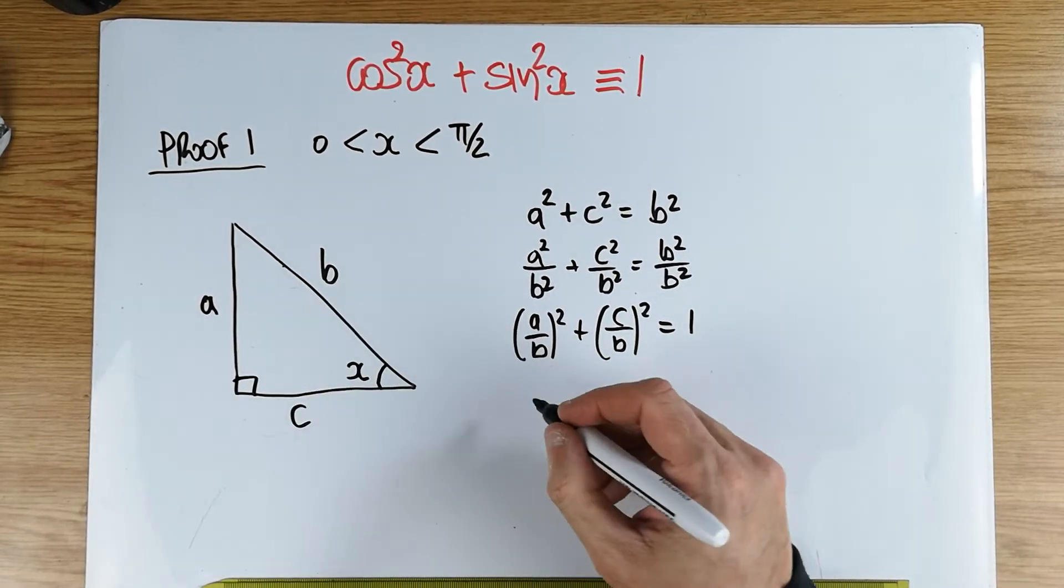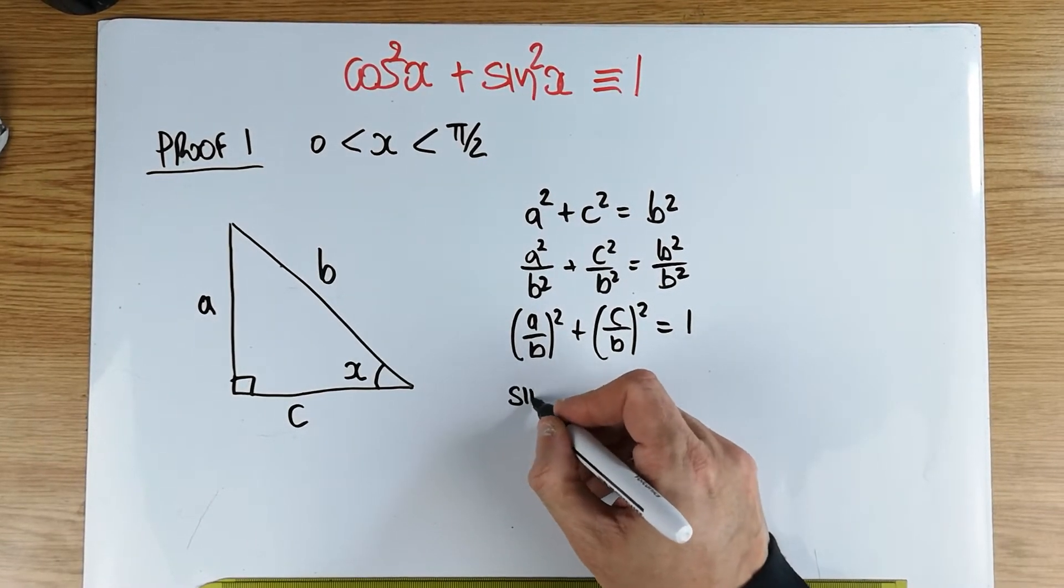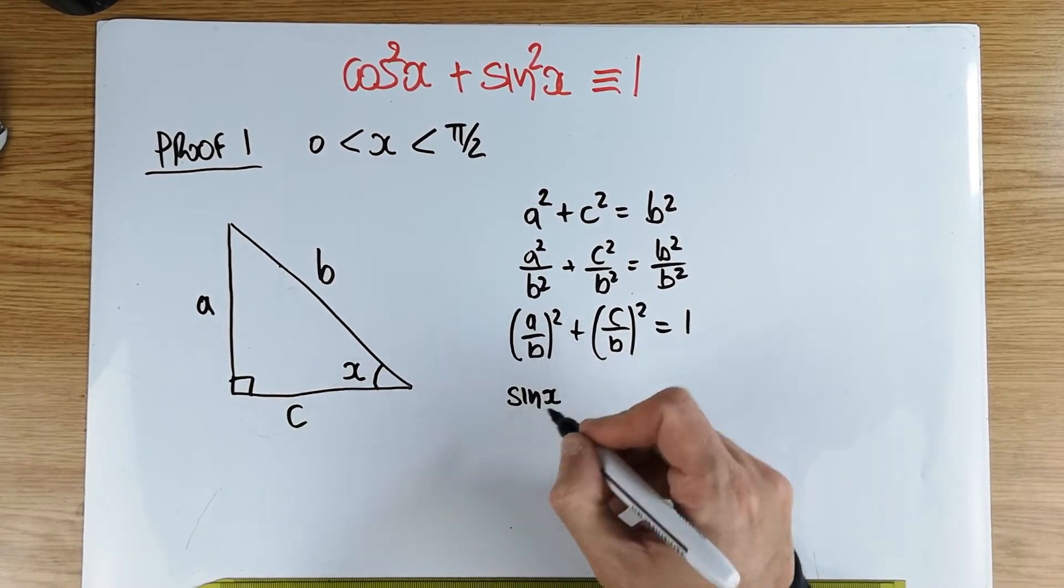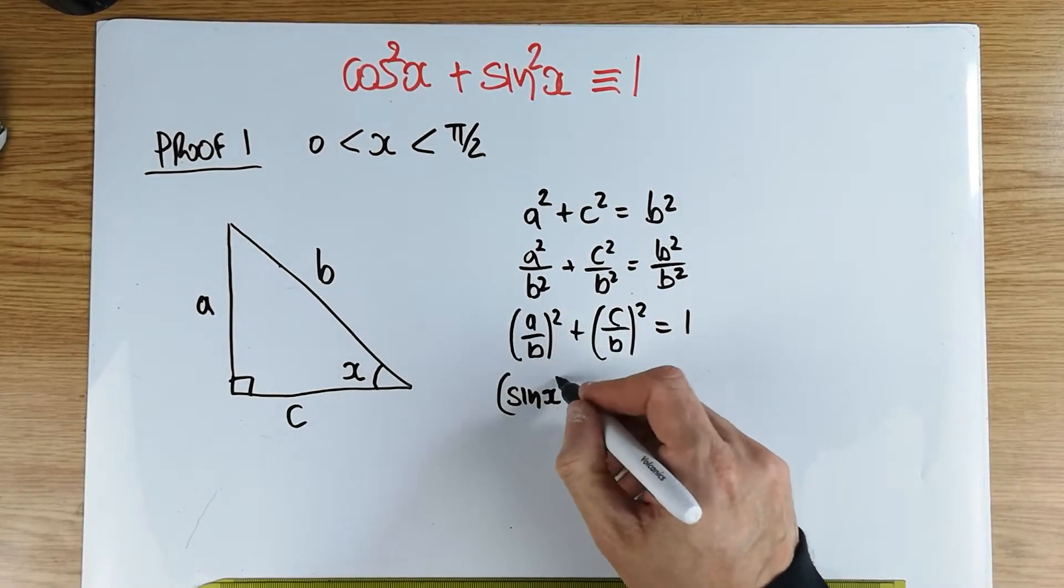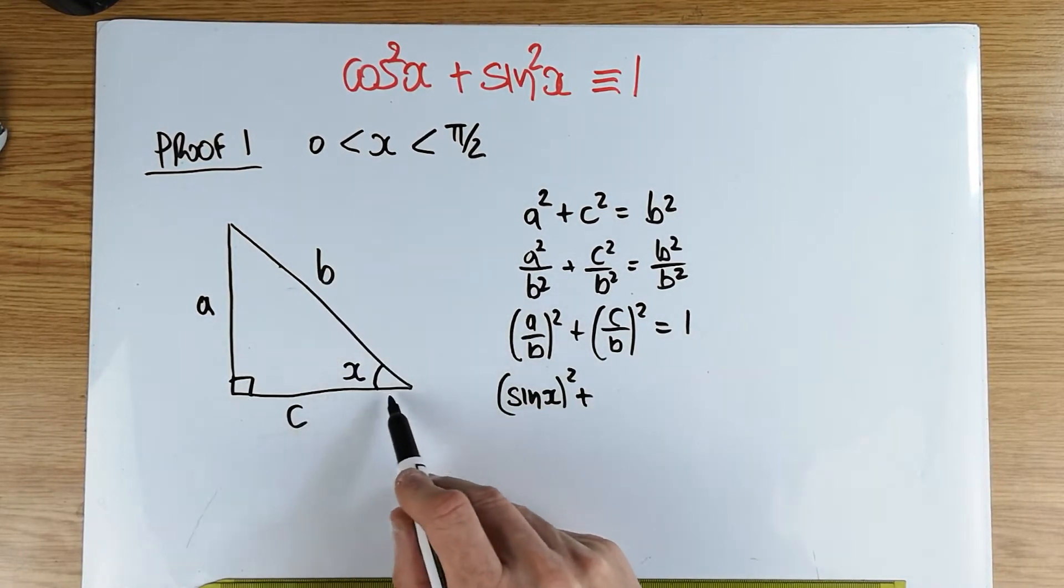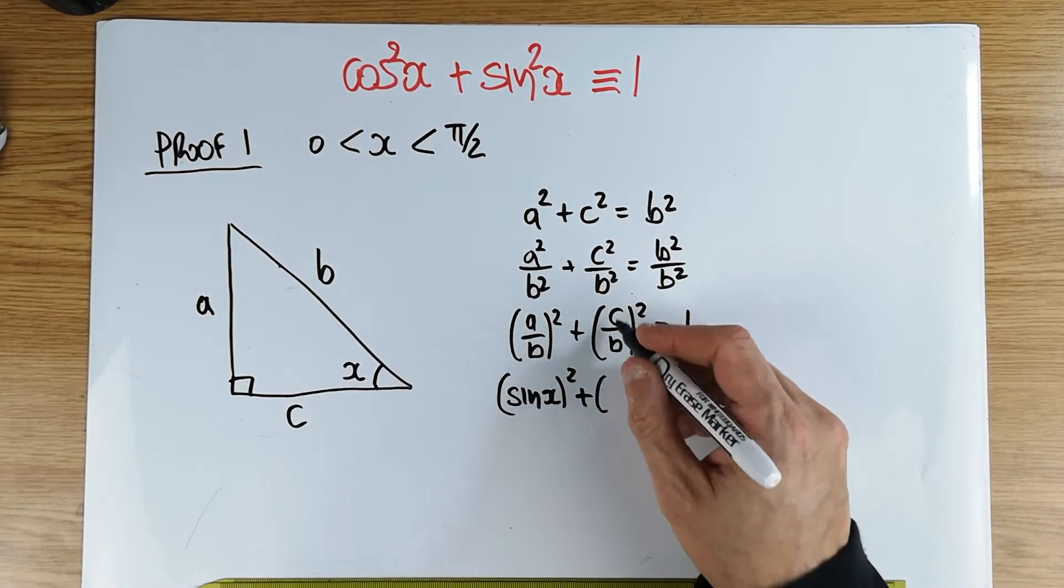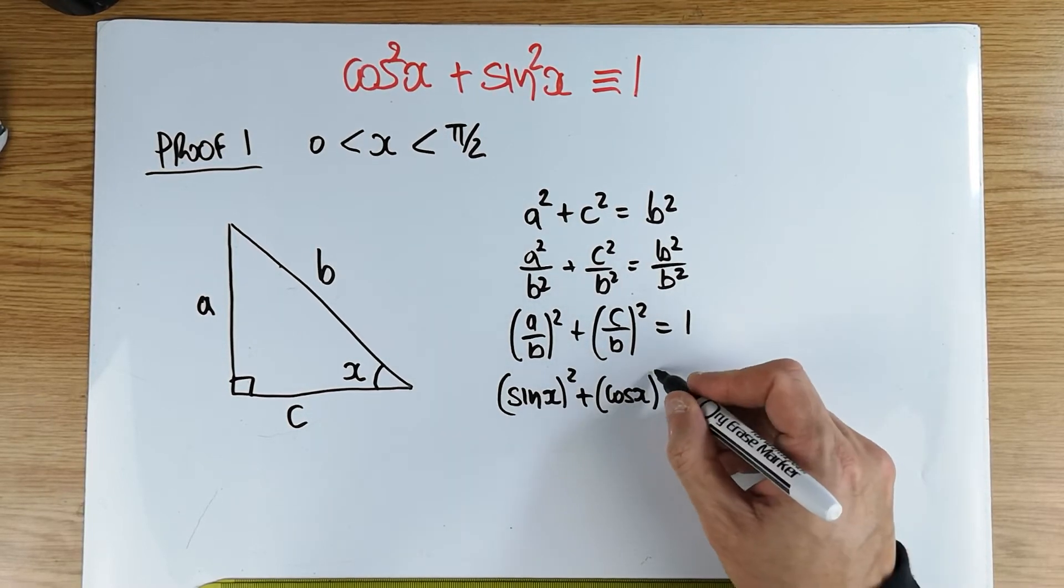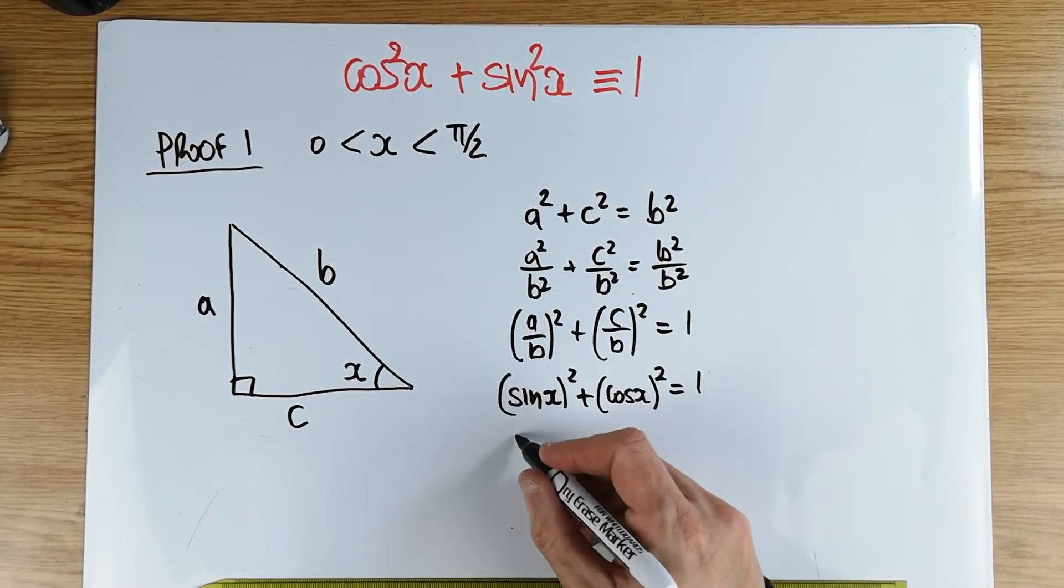this is the opposite divided by the hypotenuse. So that's, in fact, the sine of x, that's what this quantity is, all squared plus c divided by b, that's the adjacent divided by the hypotenuse. So the sine of b is, in fact, your cos of x all squared is equal to 1.